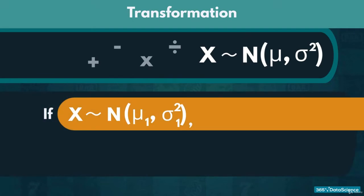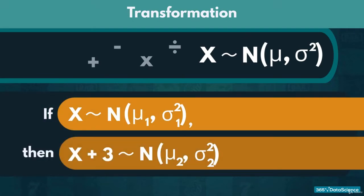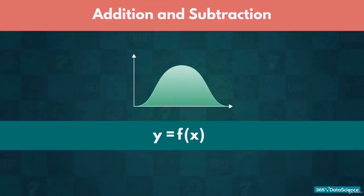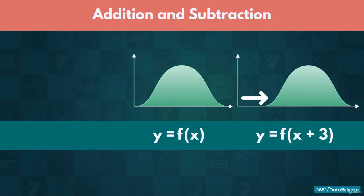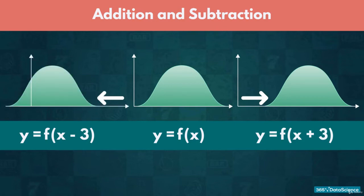For instance, if we add a constant to every element of a normal distribution, the new distribution would still be normal. Let's discuss the four algebraic options and see how each one affects the graph. If we add a constant, like 3, to the entire distribution, then we simply need to move the graph three places to the right. Similarly, if we subtract a number from every element, we would simply move our current graph to the left to get the new one.